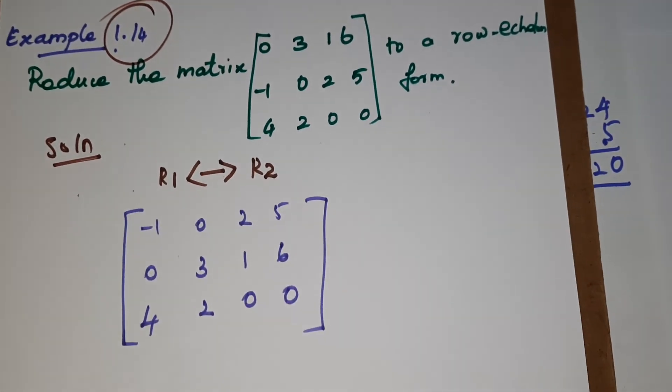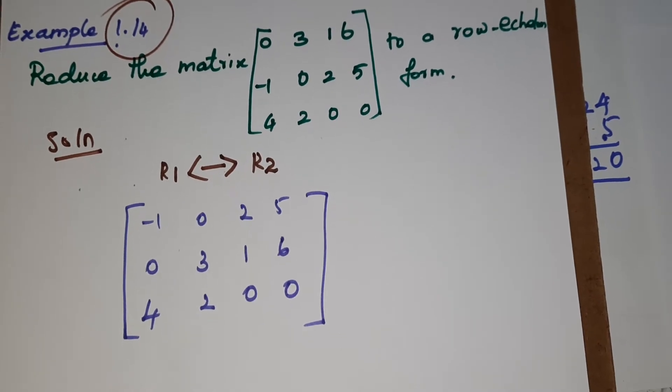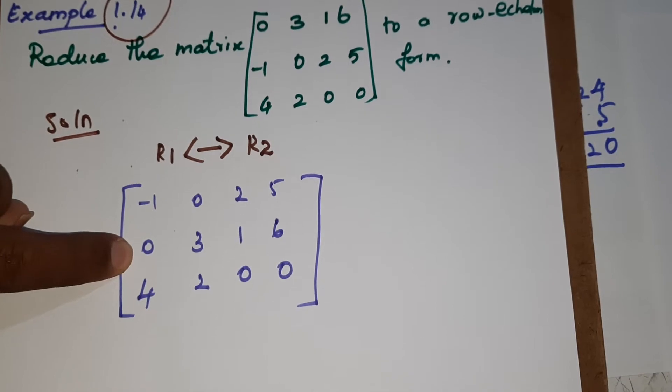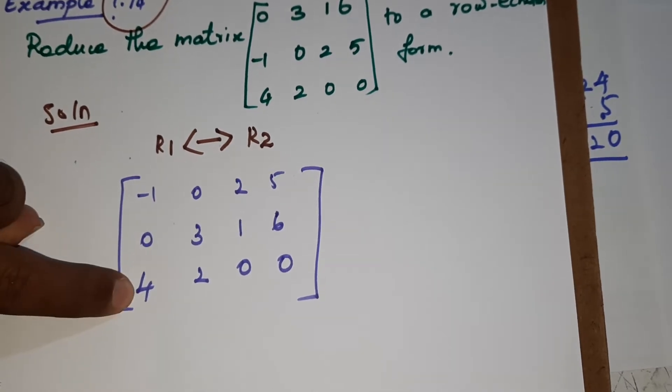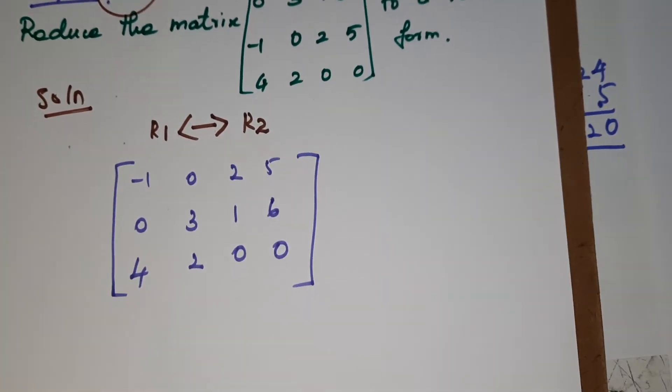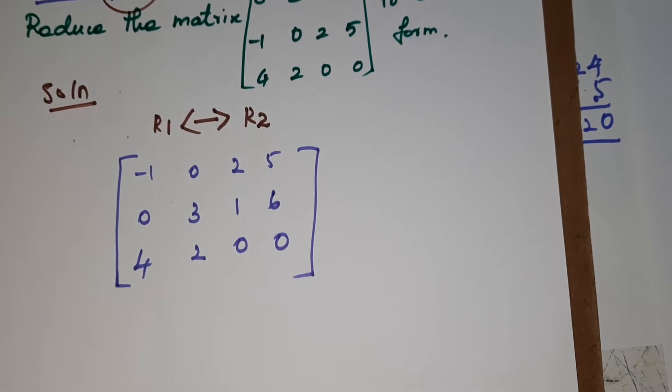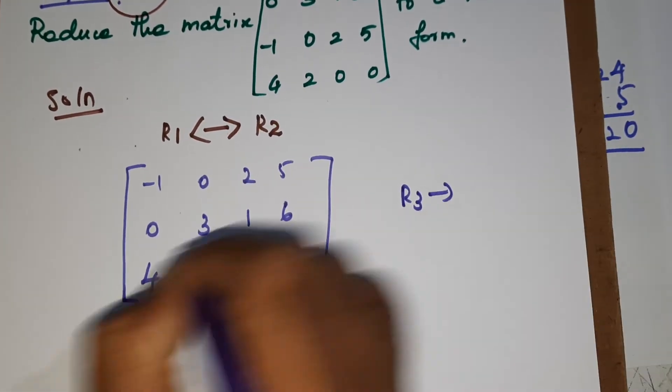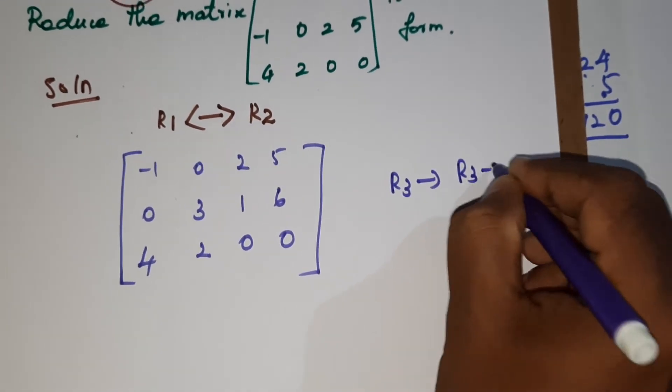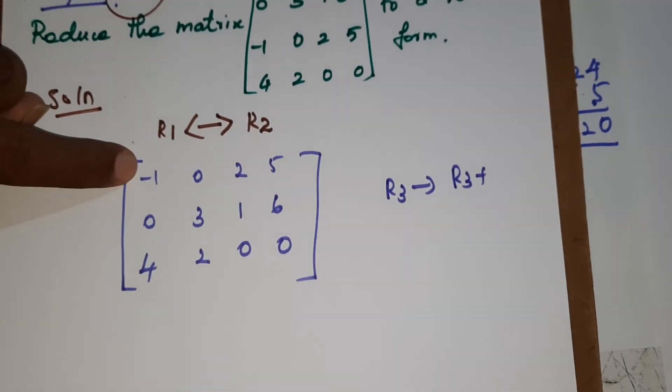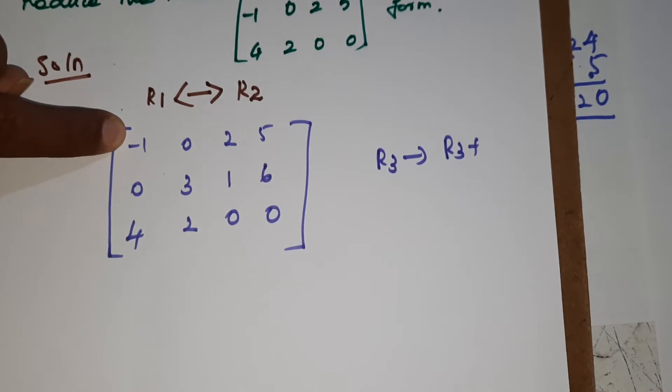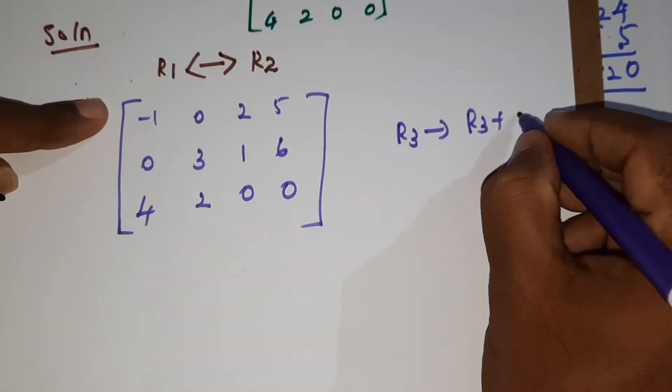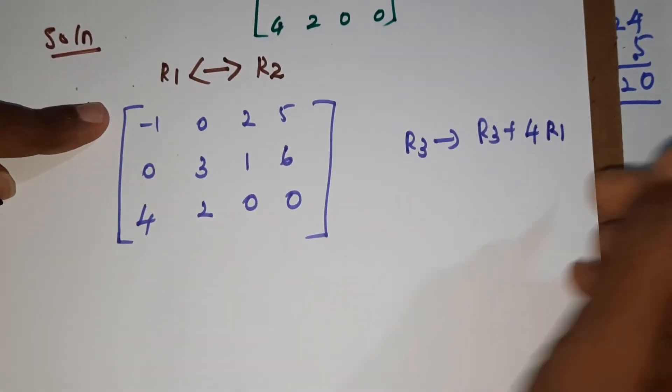The second step, what we have to do. Already we know the second row, the first element, we have 0. So third element also, we should show 0. So what we have to do, R3 becomes R3 plus 4 into R1.